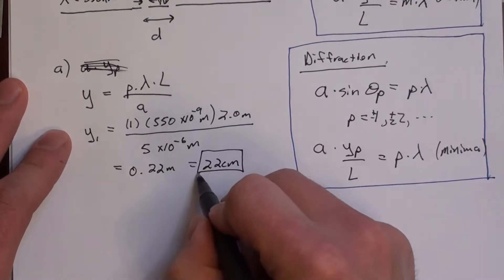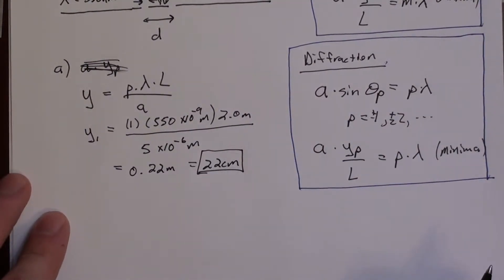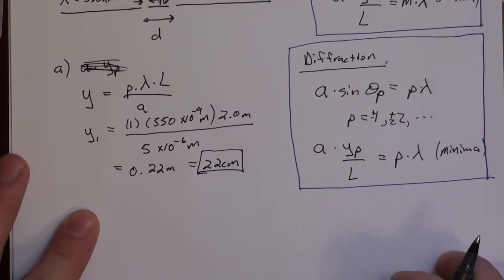Let's just say 22 centimeters. So that's how big our pattern is, that's kind of the scale of the size of this diffraction pattern.